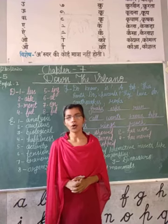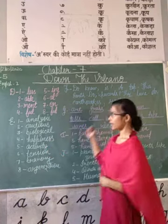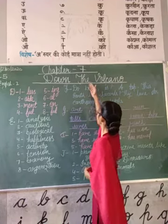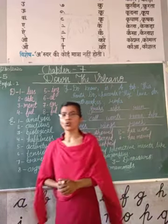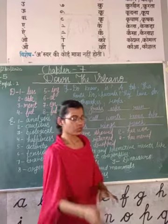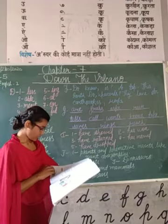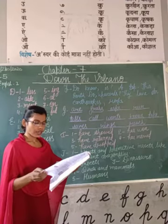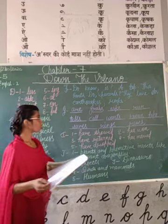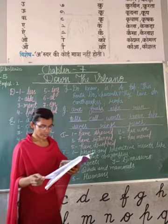I am here with a new online video class in which we will discuss some exercises of Chapter Number 7, which is 'Down to the Wall.' On page number 67, you have found some exercises related to this chapter — Question numbers A, B and C.